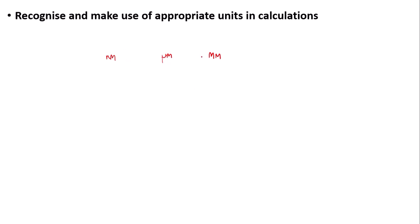To get from millimetres to micrometres you times by a thousand. Micrometres to nanometres you times by a thousand again, and then the opposite occurs in the other direction. From nanometres to micrometres you divide by a thousand, and from micrometres to millimetres you divide by a thousand again. The trick is: if the unit is getting larger, for example nanometres to micrometres or micrometres to millimetres, the value gets smaller.